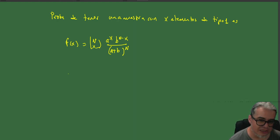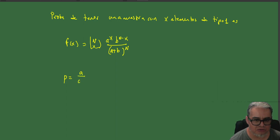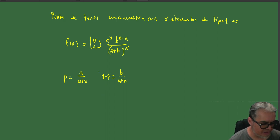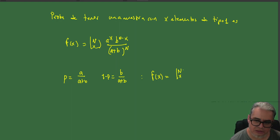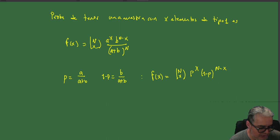Si llamamos P a la proporción de elementos de tipo 1, que sería A sobre (A+B), entonces 1 menos P es B sobre (A+B). De esta forma, F(X) también la podemos escribir como C(N,X)·P^X·(1-P)^(N-X). Esa es la probabilidad de obtener una muestra con X elementos de tipo 1.